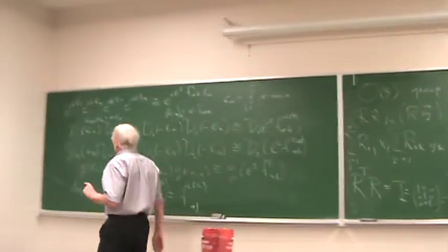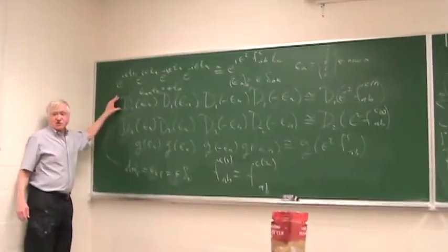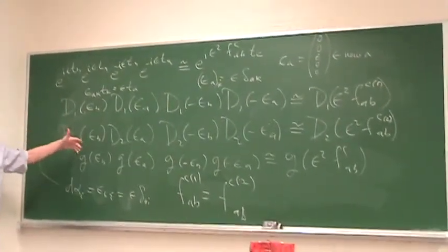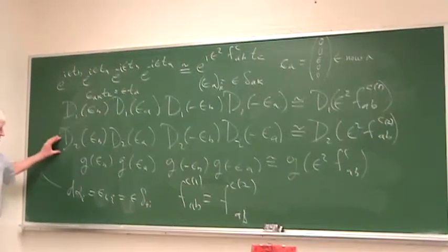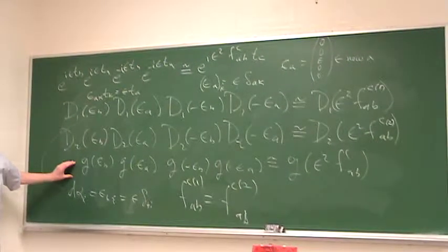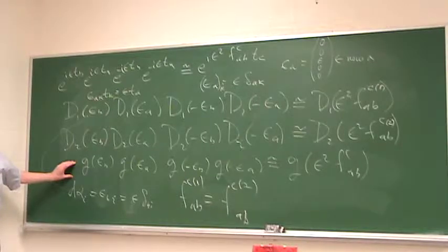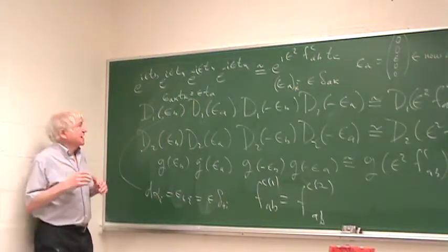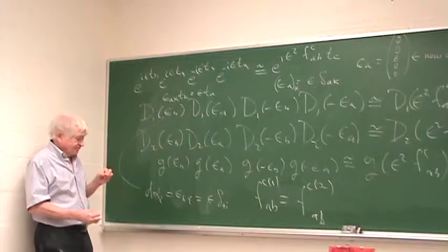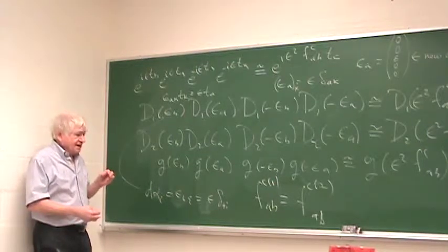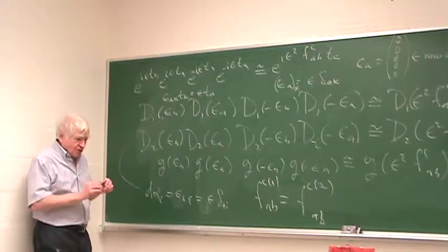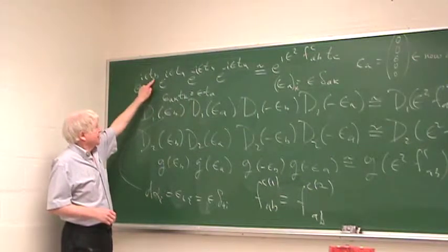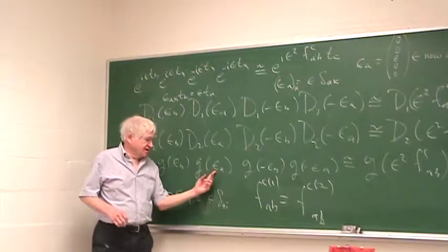But then we come over here, and we recall that the two different representations, which may have different sizes, or they may have the same size but be different representations. Both representations have to respect the multiplication law of the group. So G of epsilon B, epsilon B is a set of n parameters, and they're all zero except for the epsilon that multiplies the generator T_B. And this one is the same thing, but they're all zero except for the epsilon that multiplies T_A.